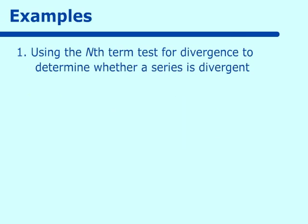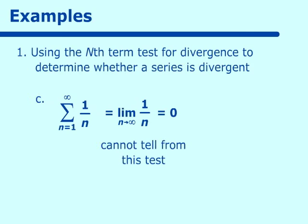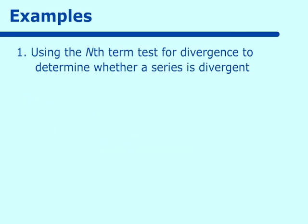Using the nth term test for divergence, try this one: the sum from n equals 1 to infinity of 1 over n. If we take the limit as n approaches infinity of 1 over n, we get 0. Remember the nth term test says it does not equal 0 — so if it equals 0 we cannot tell anything from this test. We will have other tests to determine what is happening.